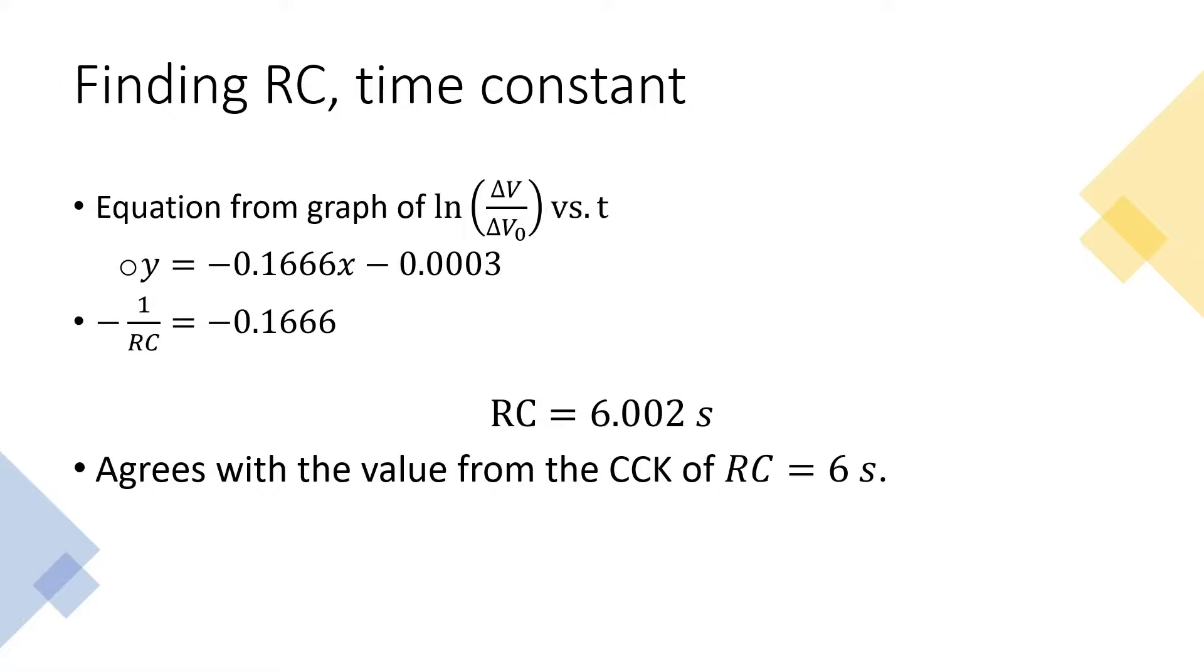Finding RC time constant. Due to the time dependence of voltage, we can take the equation for the line of best fit from the graph of the natural log of voltage over initial voltage versus time. The slope of that equation would be equal to the negative inverse of RC, our time constant. Therefore, we can solve for RC and find that RC equals 6.002 seconds. This value is extremely close to and agrees with the value of the circuit construction kit where RC equals 6 seconds.